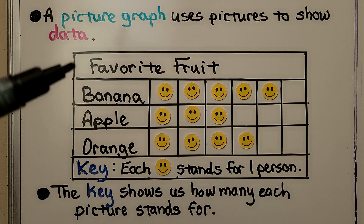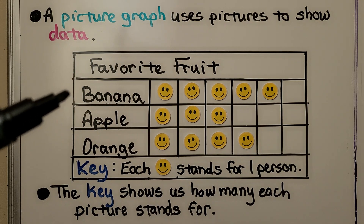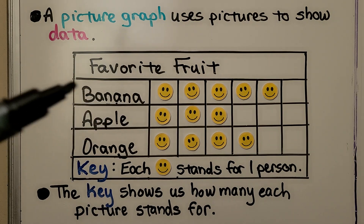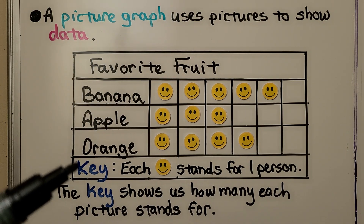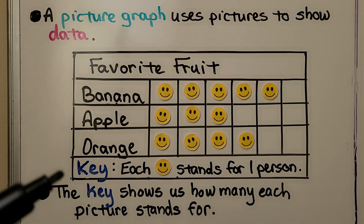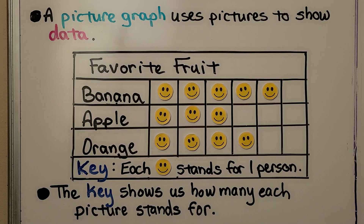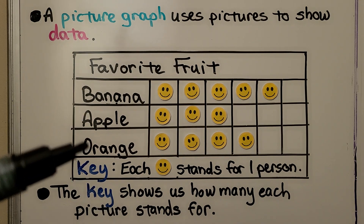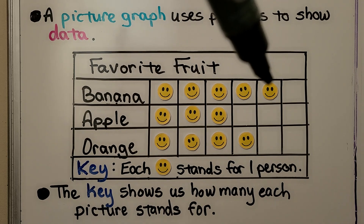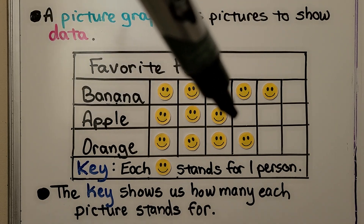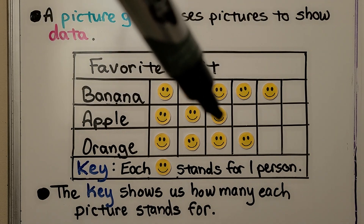Here we have 'Favorite Fruit,' and you can see they counted some people. For our key right here, it shows us how many each picture stands for — each smiley face stands for one person. They have banana, apple, and orange. We can see there's more banana, and the fewest is apple.